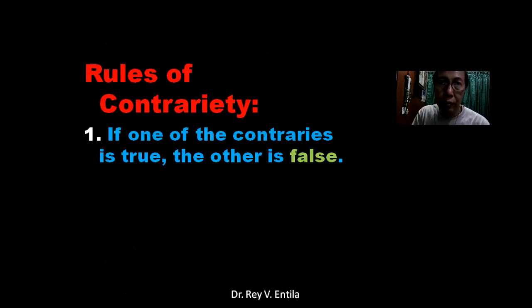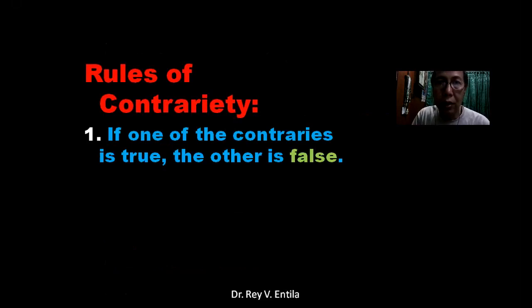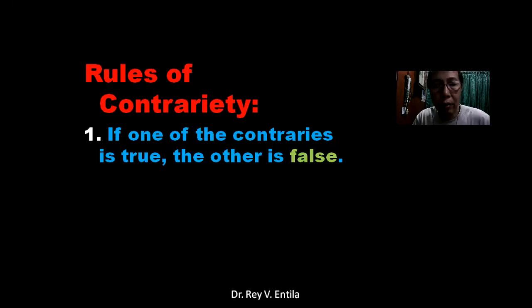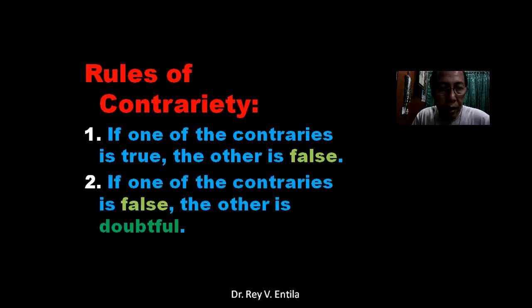For example: if we say 'all who repent will see the kingdom of God,' and the negative says 'no one who is repentant will see the kingdom of God,' then if the first is true, the second is false. Number two: if one of the contraries is false, the other is doubtful.